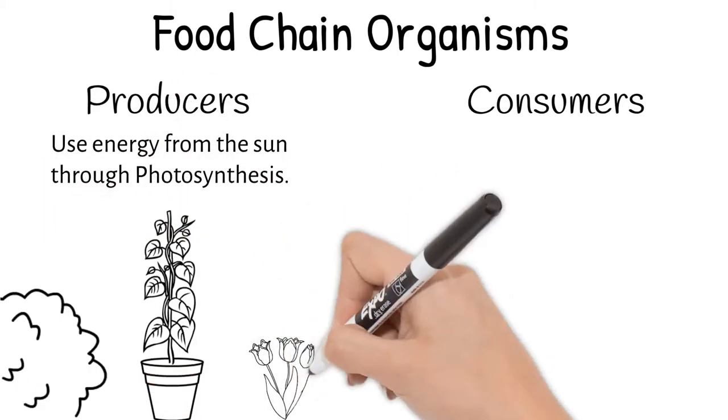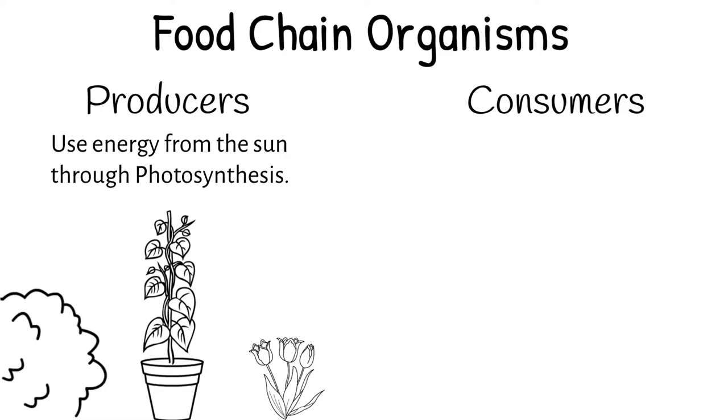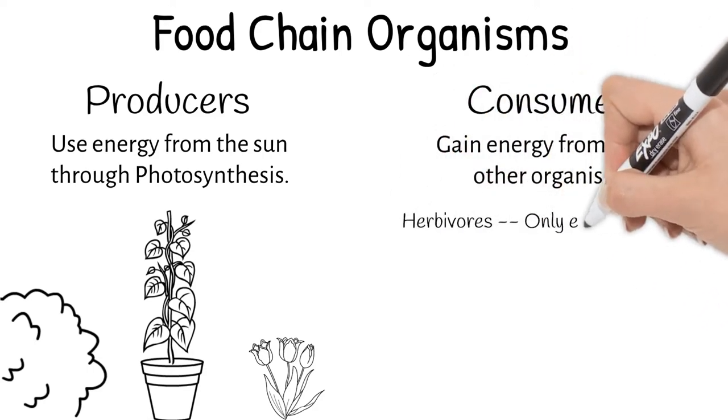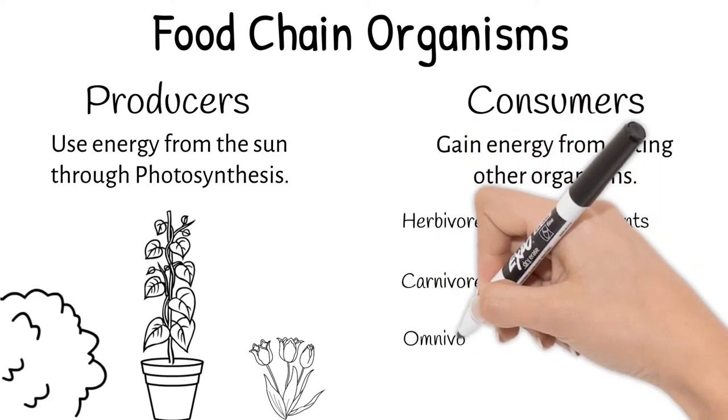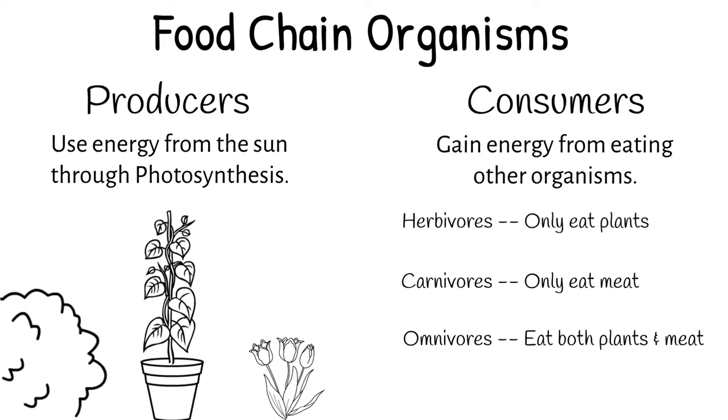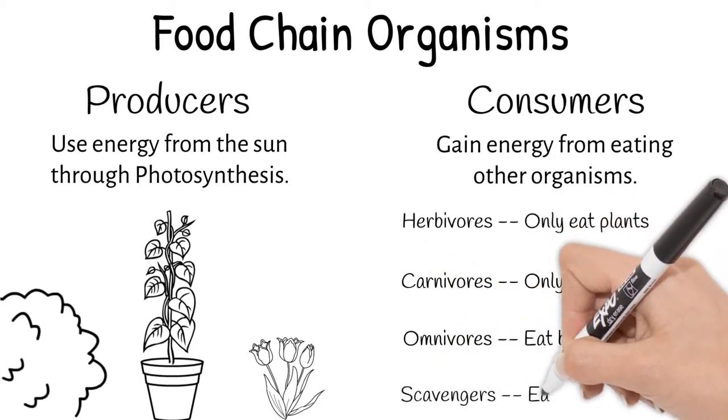Consumers are animals and they get their energy from eating other organisms. There are four types of consumers: herbivores which only eat plants, carnivores that only eat meat, omnivores that eat both plants and meat, and lastly scavengers that eat dead organisms.